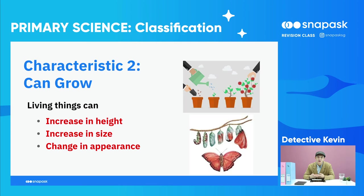Next, living things can grow. What does growing mean? We can increase in height, increase in size, and change our appearance. For example, if we found a cocoon, do we know it's a butterfly? Butterflies change their appearance — they look very different when young as a caterpillar, and when older as a butterfly.